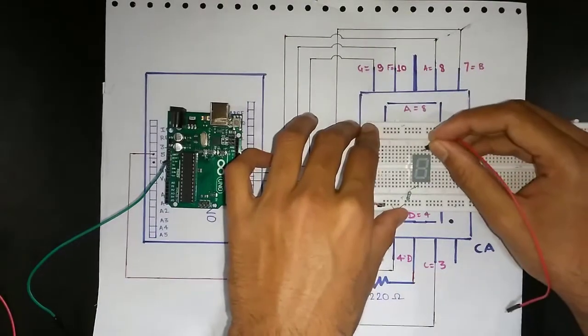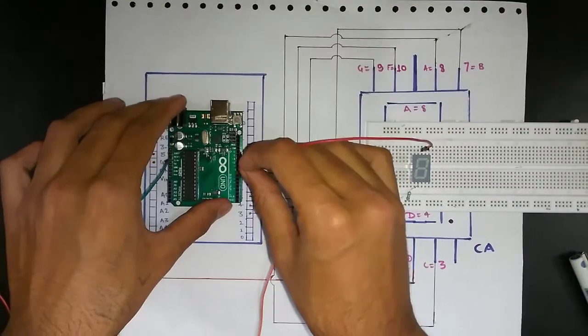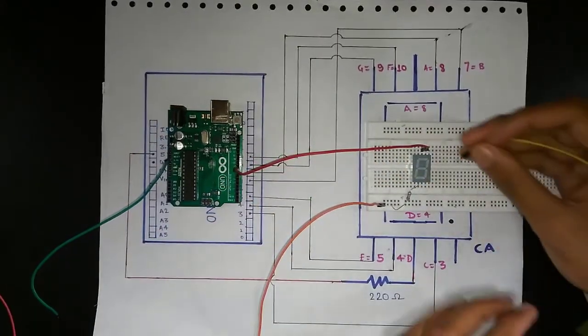Now let us connect the connections on the breadboard. We will connect a wire to the segment A and place it on the 8th port in Arduino.